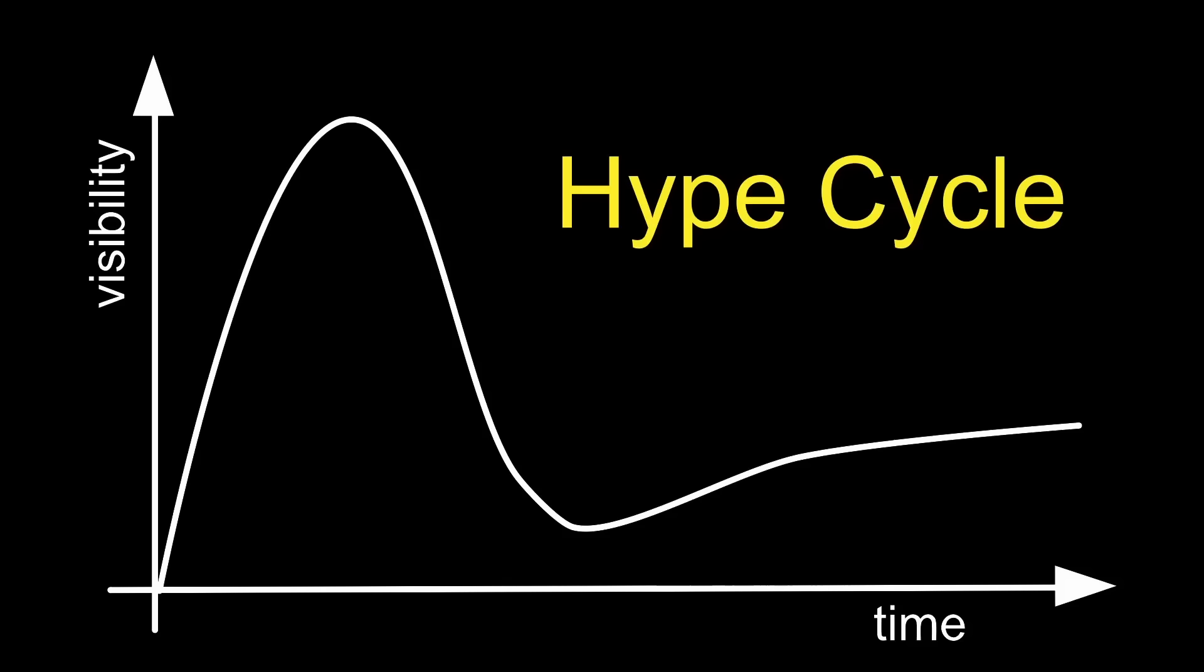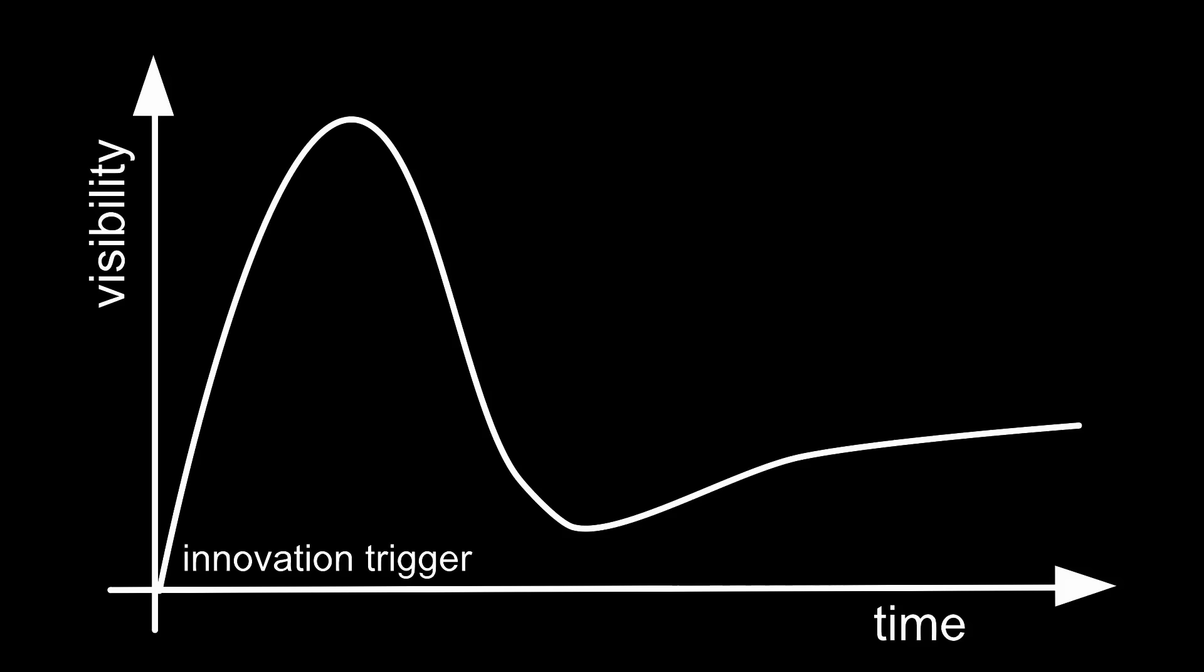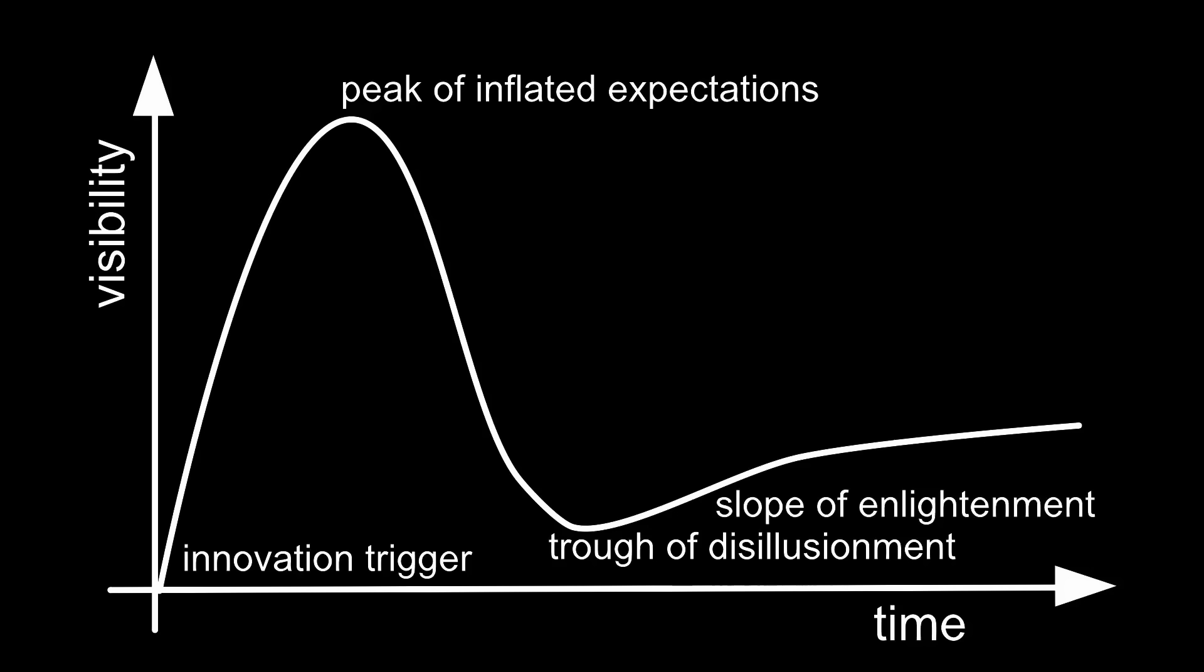It has five distinct phases. There's the initial trigger, the peak of excitement, the trough of disillusionment, the slope of enlightenment, and the plateau of productivity.